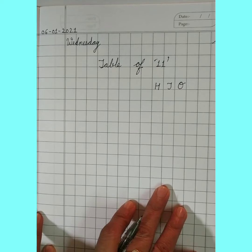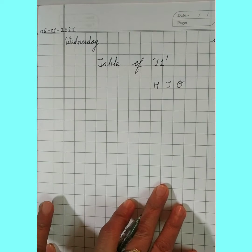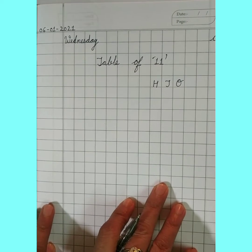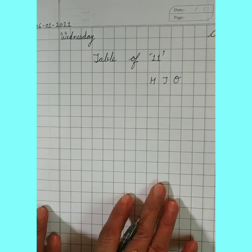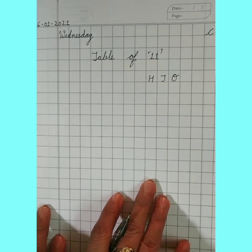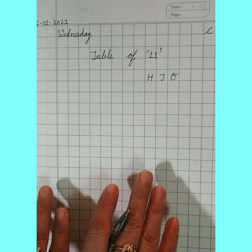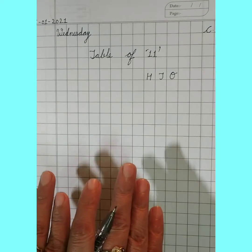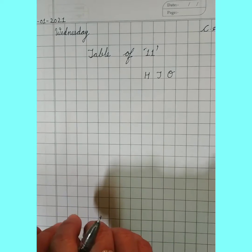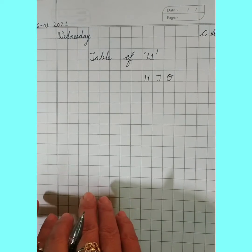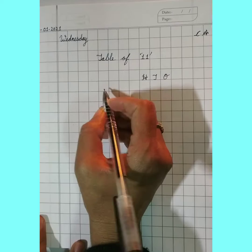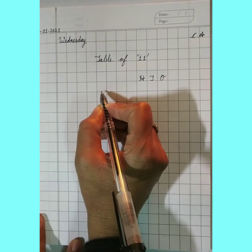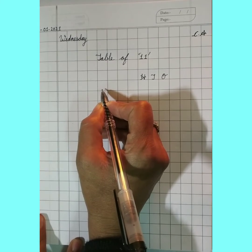Table of 11 is a very easy table, but do you know the multiples of 11's table is always a repetition of the same digit? The multiples of 11's table is always a repetition of the same digit, like 11 has double one.